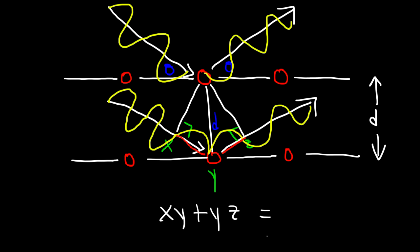That extra distance is equal to the wavelength of the wave. It can also equal a multiple of the wavelength, so it's going to be n times lambda, where lambda is the wavelength of the x-ray. That can be 2 times lambda, 3 times lambda, 4 times it — it can vary. If you're dealing with a problem that says first order diffraction, n is 1. If second order diffraction, n is 2, and so forth.